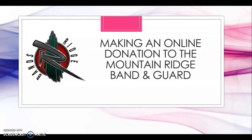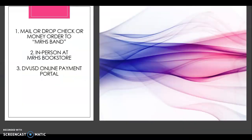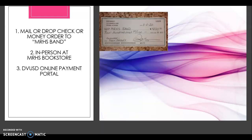There are three ways to make a donation to your student's Band & Guard Ledger. First, you can mail a check or money order made payable to MRHS Band, or drop your payment into the lockbox outside the director's office in the Band Room. Be sure to include the student's name on the payment. The fair share volunteer will credit the donation to the student's charms ledger.